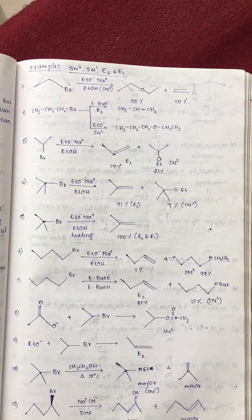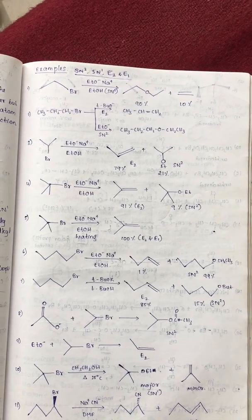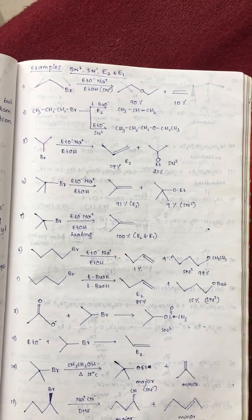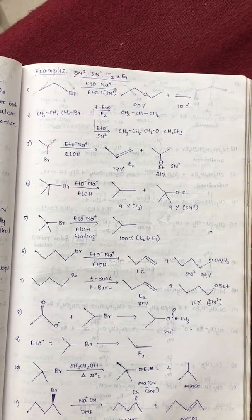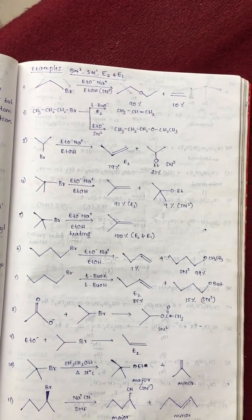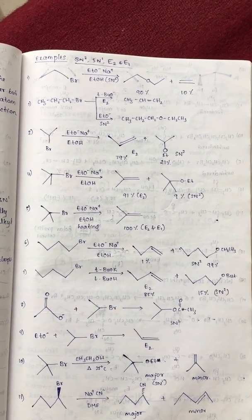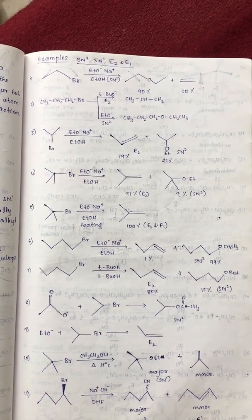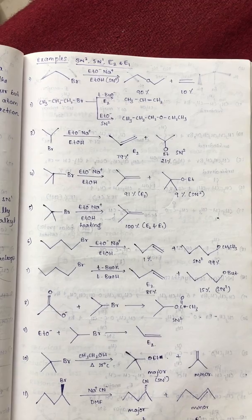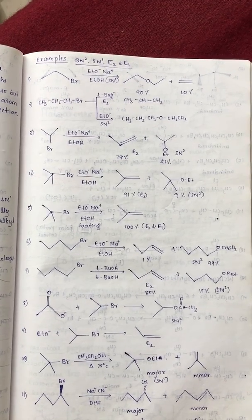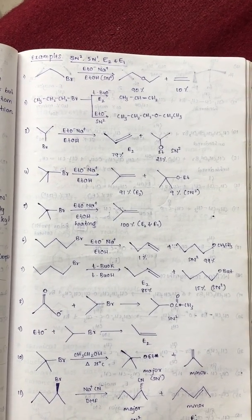Next, isopropyl, third example. React with sodium ethoxide in alcohol. So, secondary alkyl halide means it forms substitution as well as elimination. Generally, elimination is a major product than the substitution reaction.